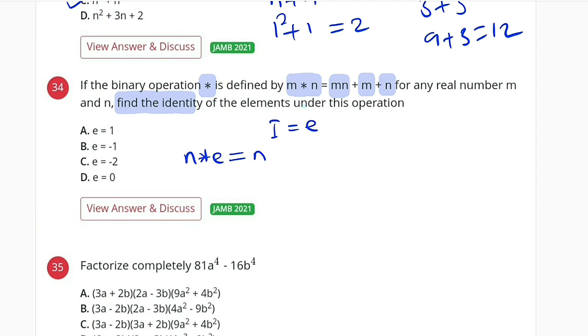From the definition, we have learned that if you have M asterisk N, it is the same thing as MN plus M plus N. So now let us relate this. Therefore, this will be N multiplied by E, plus N, plus E. And it must give us this same number N, because identity won't change it. Now let us collect the like terms by taking this to the right hand side, leaving NE plus E equal to N minus N.